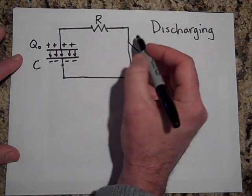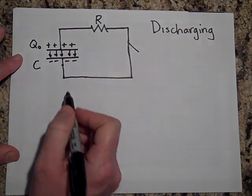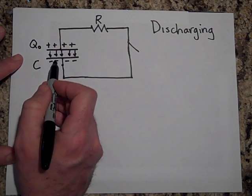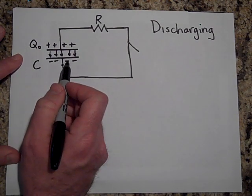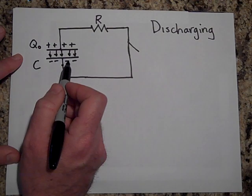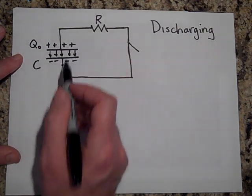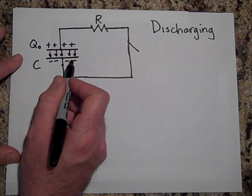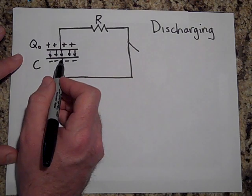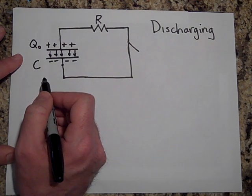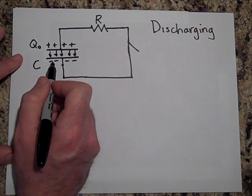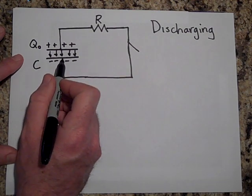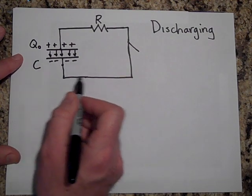When you close this switch, this starts to discharge. But here's the thing: after a few of the electrons have left, the electrons that remain are no longer in as much of a hurry to get over to the other side. So as the electrons deplete on this plate, the rate at which they leave the plate actually goes down.